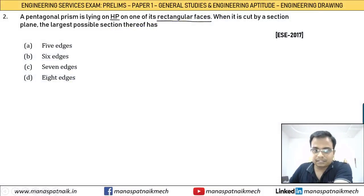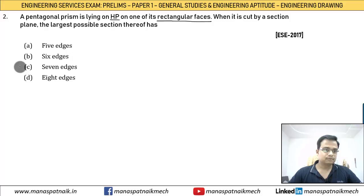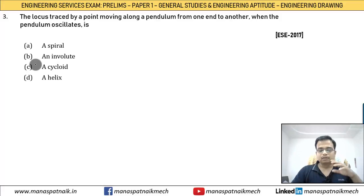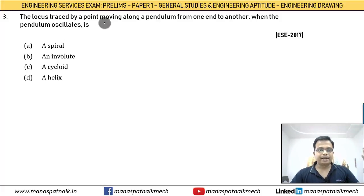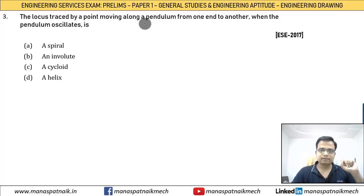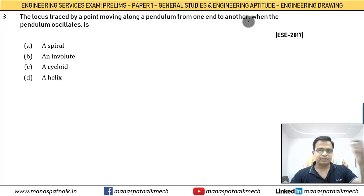So the answer is seven edges. Moving forward with problem number three: the locus traced by a point moving along a pendulum — there is a link along which a point is moving while the pendulum is also rotating.